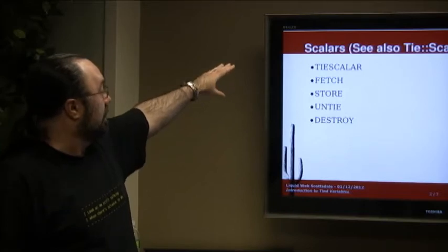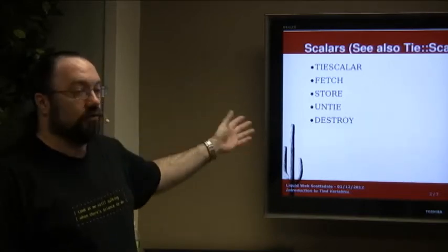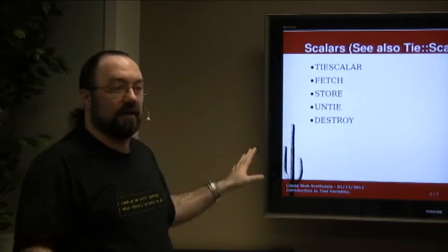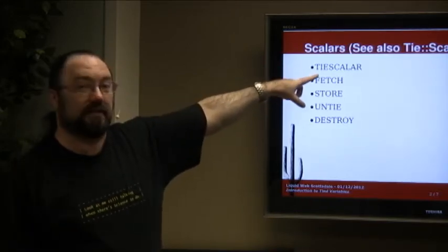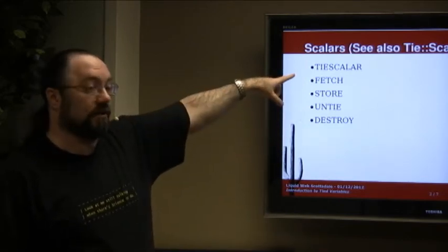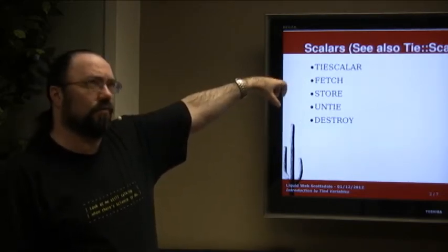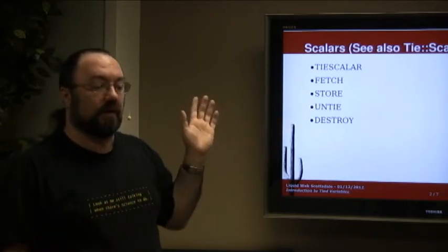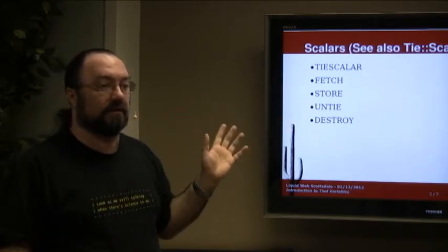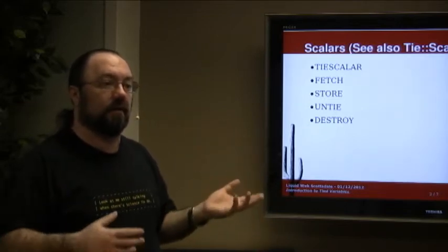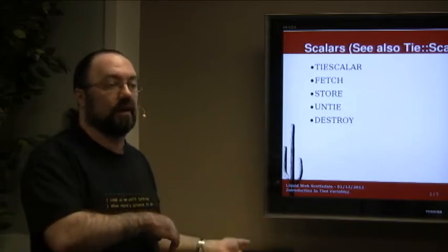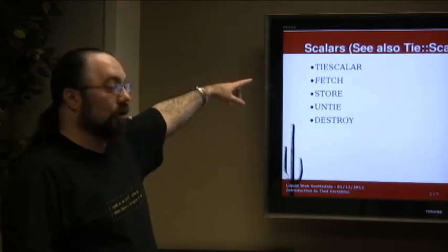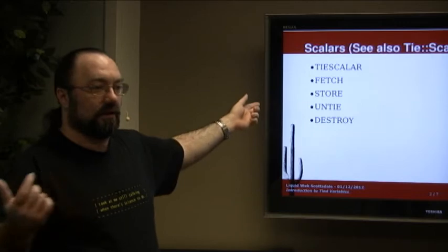For scalars, these are the methods that you need to provide. There's where the ugly details are. Look at the perl tie man page or perldoc perltie and you'll see all the information about what you need to do and what you need to know there. Some of them are optional, some of them are required. I'm not even going to get into all that. All of this stuff is documented. See also tie scalar there.